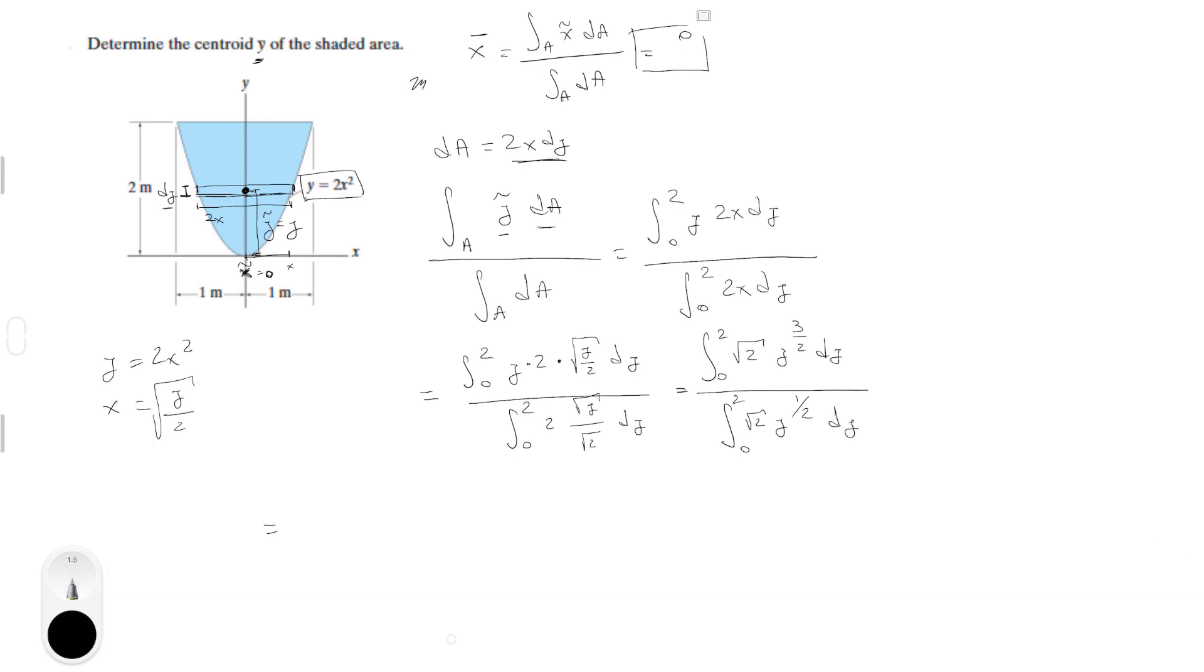Now if we keep going, we're going to get that this is equal to 2 over 5 square root of 2 times square root of 2 times y to the 5/2 from 0 to 2, over 2 over 3 square root of 2 times y to the 3/2 from 0 to 2. This is just basic calculus.